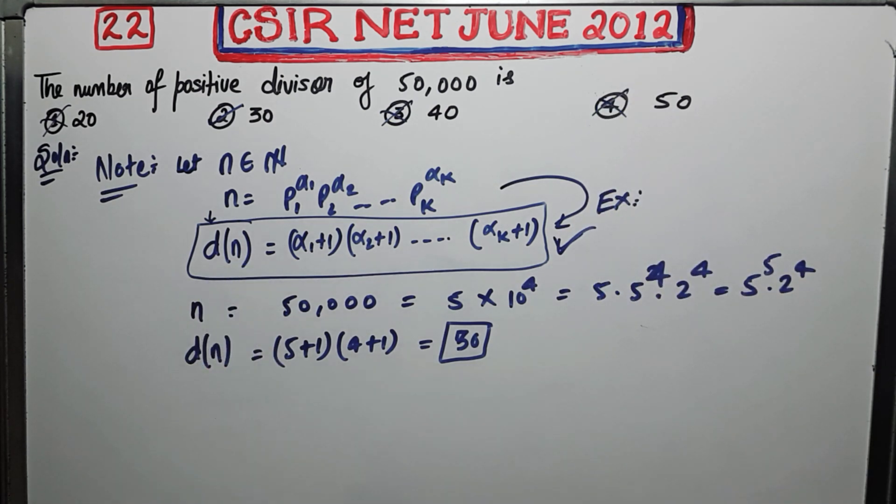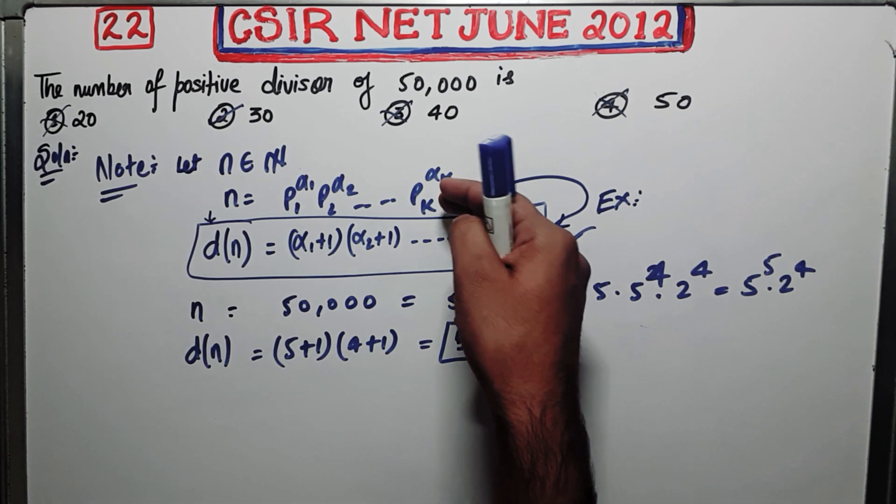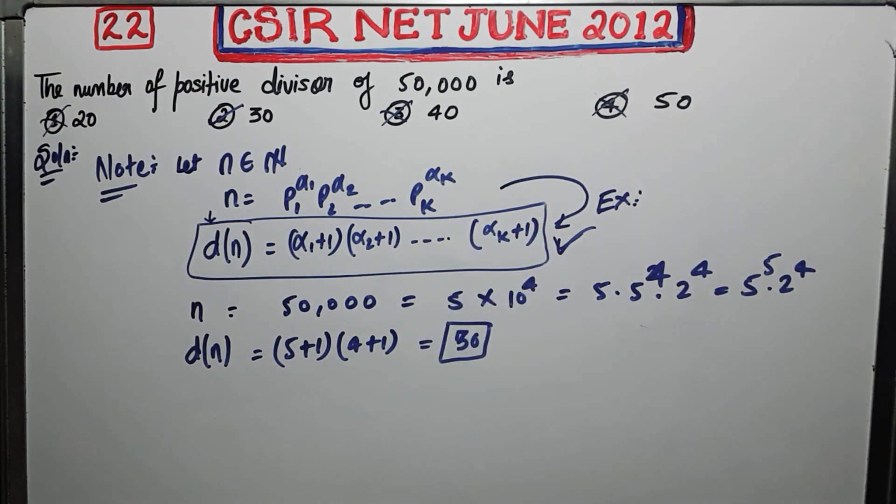The catch point is that you can write any number as the product of primes and after doing this you can actually figure out what are the number of divisors. You can either remember it or you can figure out because it's very easy to come from this step to this step using combinatorial argument.